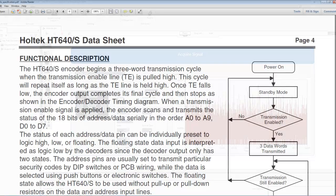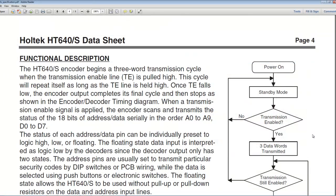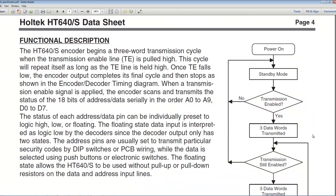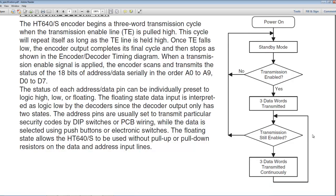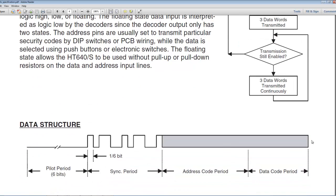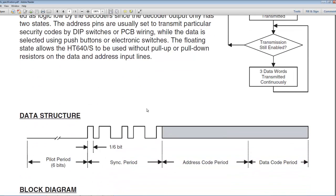Our key fob generates an on-off keyed signal at 315 MHz and uses pulse width modulation to send packets of information that include synchronization information, the device ID of our key fob, and a stream of bits that identifies which button has been pressed.